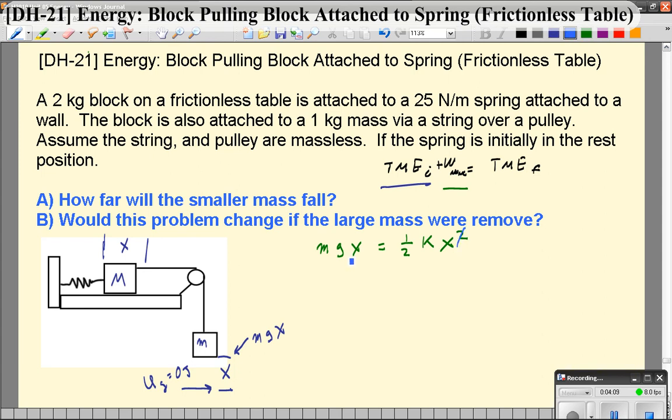This x squared, or the squared part cancels out with the x. We're going to solve for x. Bring the 2 over. You get 2 m g divide by k, and you get that this distance is equal to 2 m g over k.